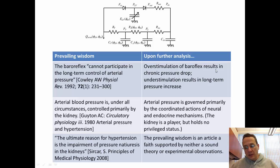The concept that arterial blood pressure is under all circumstances controlled primarily by the kidney, also a gross oversimplification. It turns out to be simply wrong. Arterial pressure is governed primarily by the coordinated actions of neural endocrine systems. Kidney's part of that process, but it holds no privileged status. The concept that the ultimate reason for hypertension is necessarily renal-centric or renogenic is just an idea that's really not supported by either any kind of theory or sound experimental observations. And it's more of an article of faith than a scientific theory.